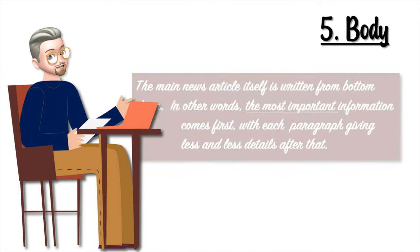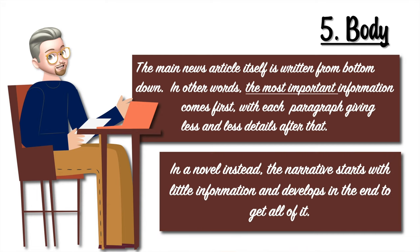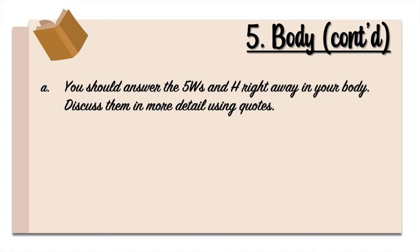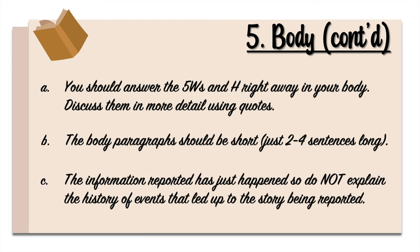The main news article itself is written from the top down — in other words, the most important information comes first, with each paragraph giving less and less detail after that. In a novel, the narrative starts with little information and develops to the end. You should answer the five W's and H right away in your body and discuss them in more detail using quotes. The body paragraphs should be short, just two to four sentences long. The information reported has just happened, so do not explain the history of events that led up to the story being reported.